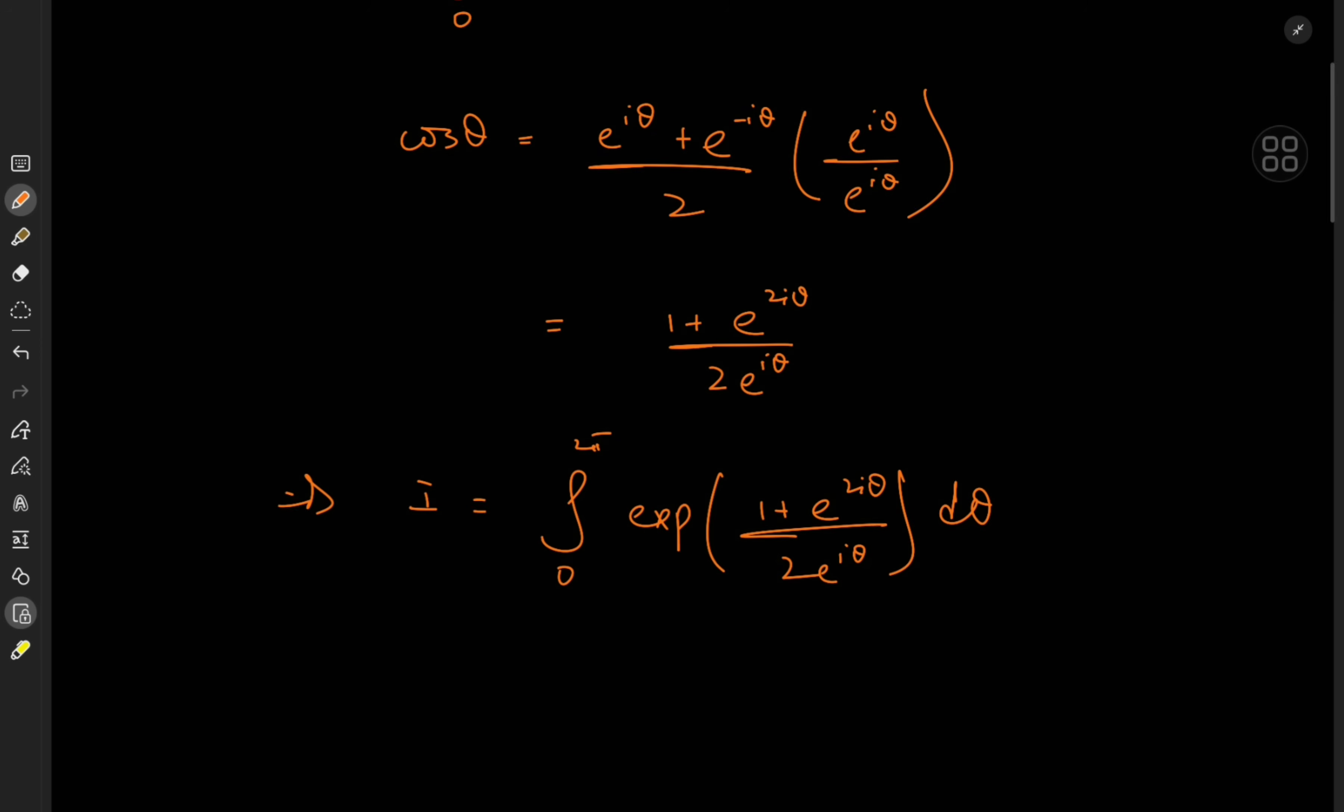So why not introduce a substitution, a u sub, or better yet, because we're in the complex realm, a z sub. So we're going to let e^(iθ) equal z, which implies on differentiation that i·e^(iθ)dθ equals dz. And this implies dθ equals (1/i)·(1/e^(iθ))dz, which I recall we subbed in as z dz.